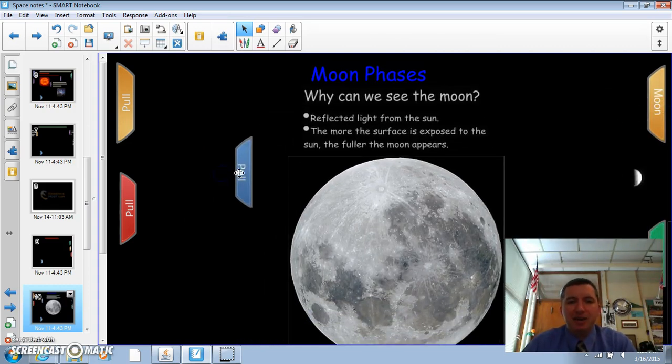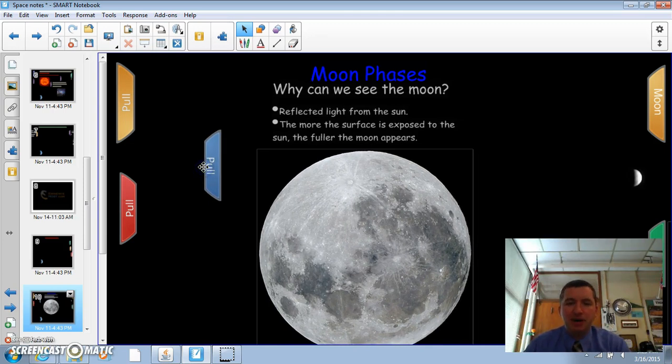Okay, why can you see it? The moon is not lit up. It does not glow from its own energy or anything like that. Simply, the moon is just reflecting the sun's rays onto it.